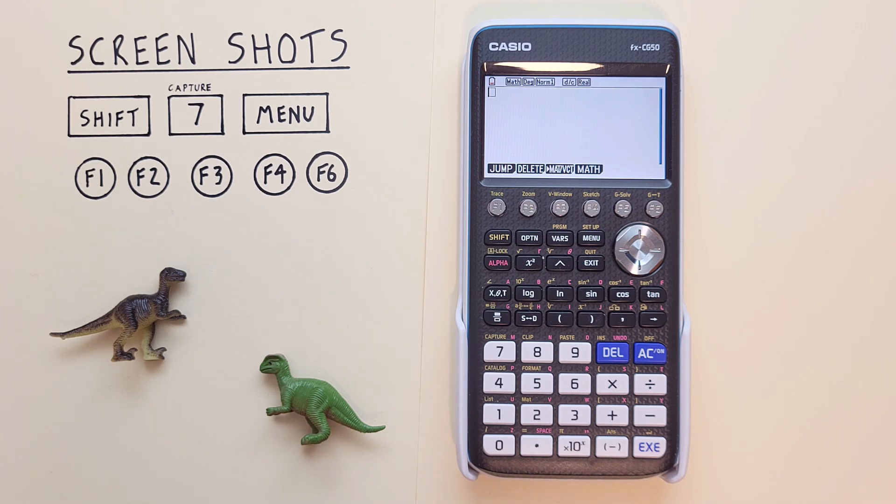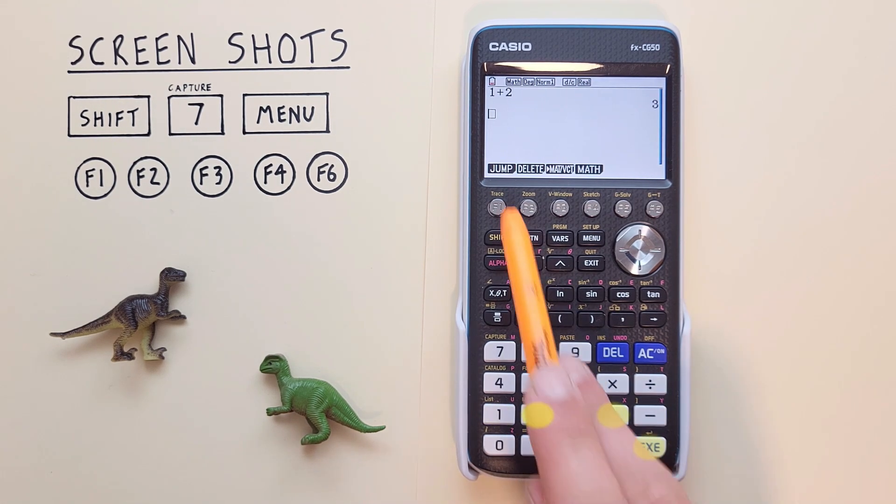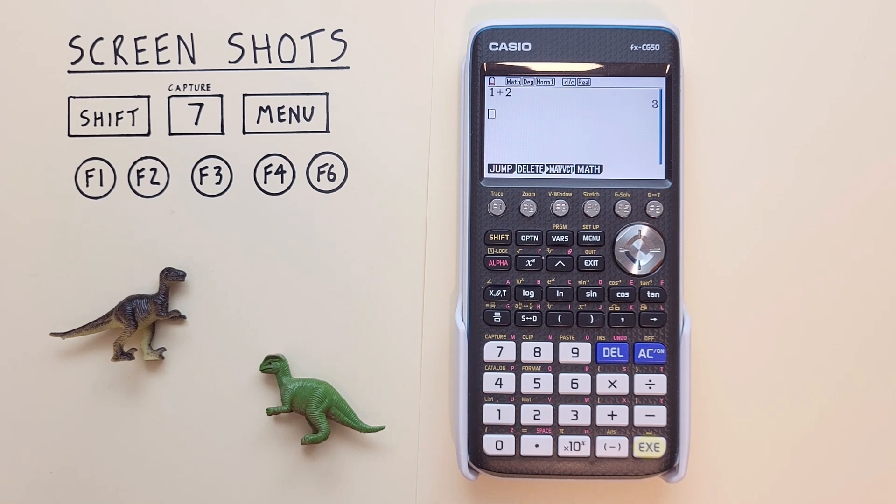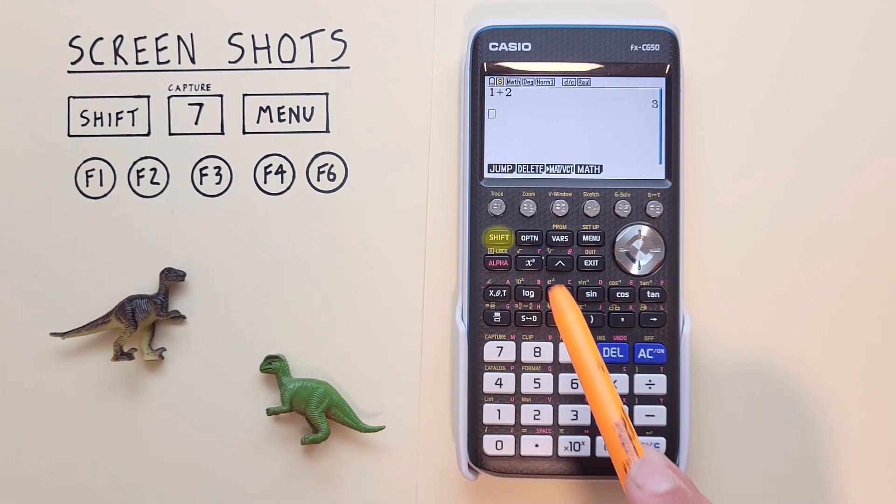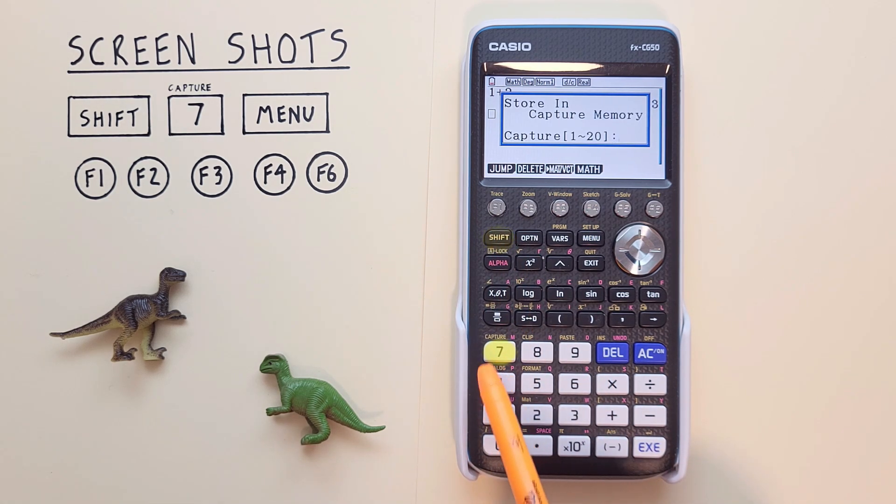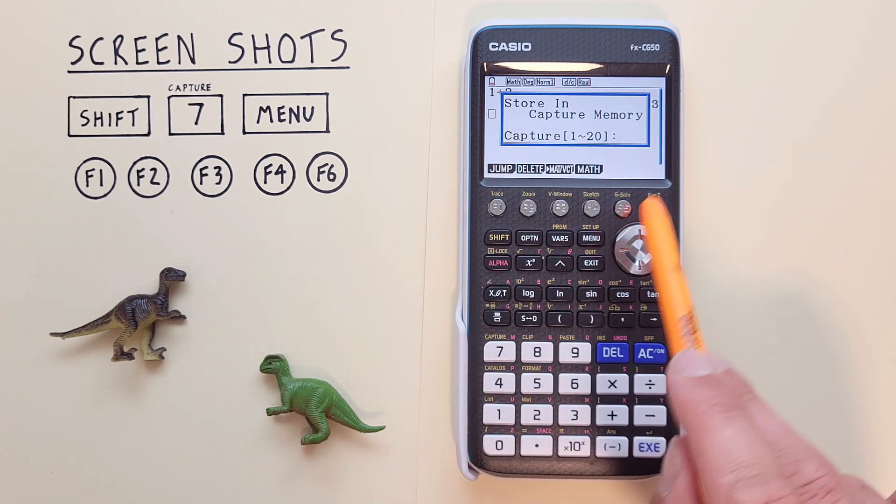For example, let's say we did an equation, something easy for the first example, and wanted to save a screenshot of that. Well, once it's on our screen all we do is press shift 7 with the shift function of capture and that brings up this screen here.